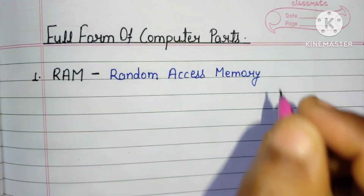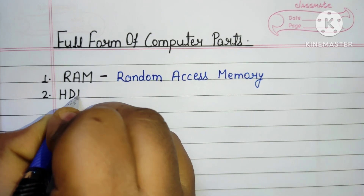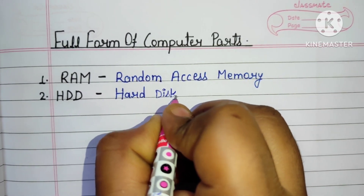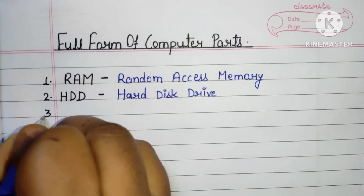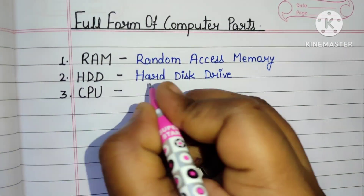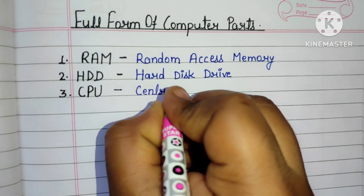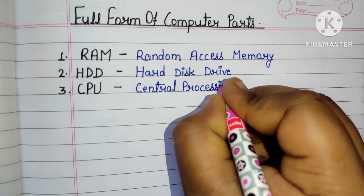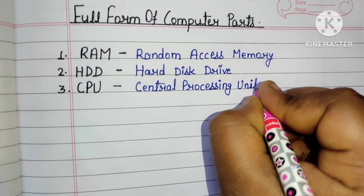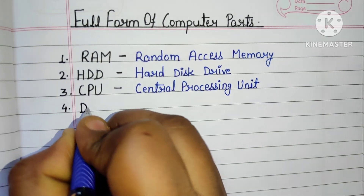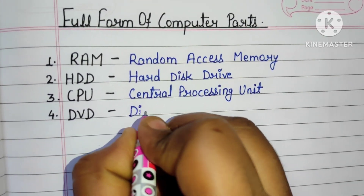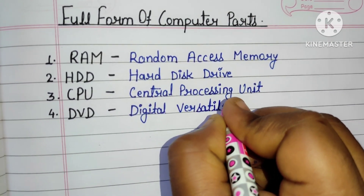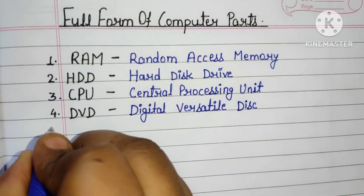One: RAM - Random Access Memory. Two: HDD - Hard Disk Drive. Three: CPU - Central Processing Unit. Four: DVD - Digital Versatile Disc.